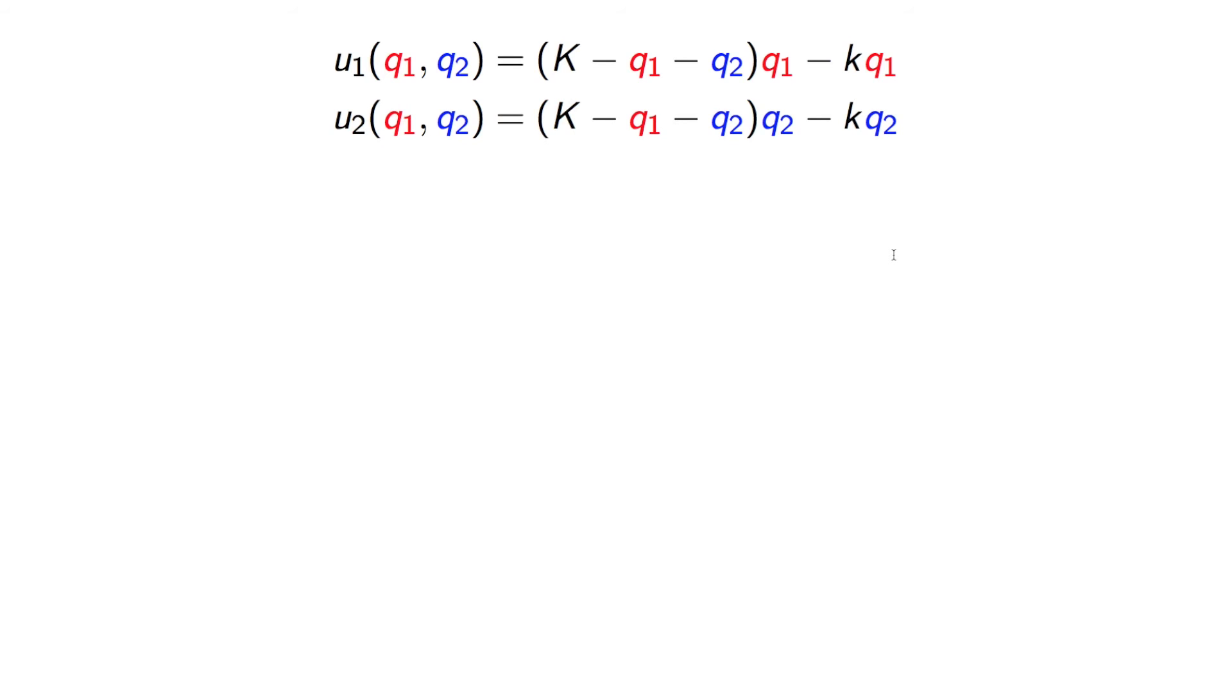Now, when we talk about pure strategies, we could also have continuous numbers. So this game here where our utilities are functions of two numbers, Q1 and Q2. Player one controls Q1 and player two controls Q2. This is just given by this expression. This is a famous game called Cournot duopoly.